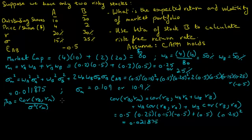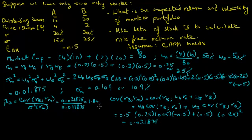The beta of stock B equals the covariance between RB and RM, which we calculated to be 0.021875, divided by the variance of the market portfolio, and this equals 1.84. So the beta of stock B is 1.84.